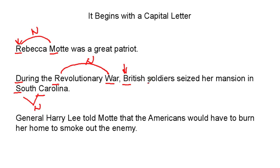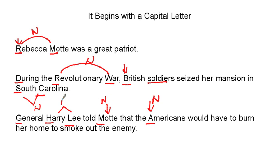I'm only going through this particular strategy. Next sentence: 'General Harry Lee told Mott the Americans would have to burn her home to smoke out the enemy.' We have General Harry Lee, Mott, Americans. 'Americans' — clearly a noun, naming a group of people. 'Mott' — that's someone's name, noun. 'Harry Lee' — that is someone's name, noun. Now 'General' is a title, and 'General Harry Lee' works as one large noun — it is his title, so it would also be included in the name. 'General Harry Lee' — that's one big noun.